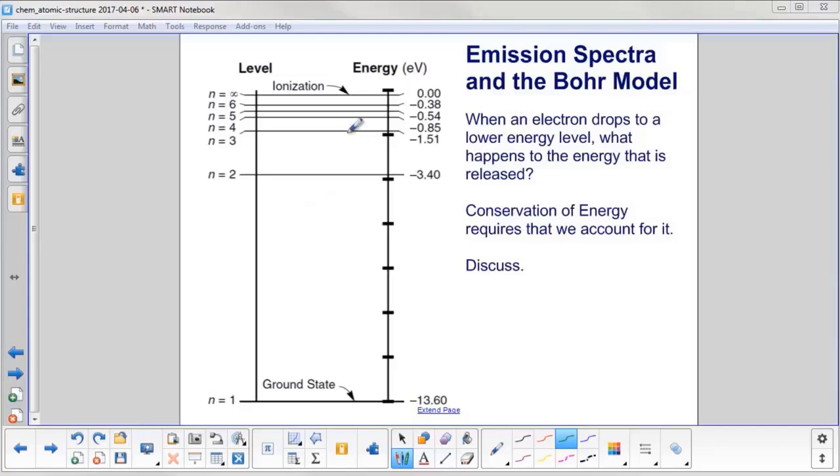When an electron drops to an energy level lower than it, for example, if you go from n equals 3 to n equals 2, what happens to the energy that is released? Conservation of energy requires that we think about it and figure out where it goes. If you're with a few other people, discuss it. If you're by yourself, think about it for a second.